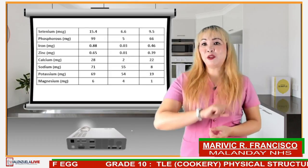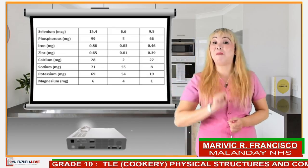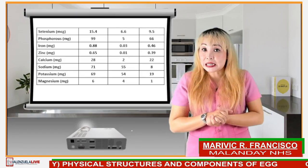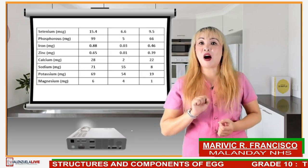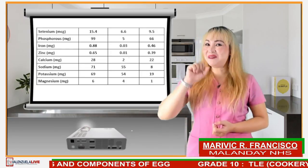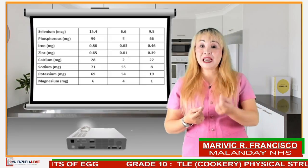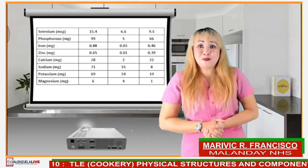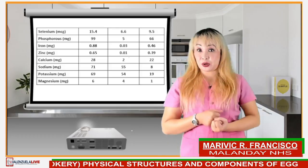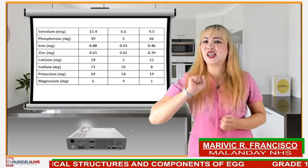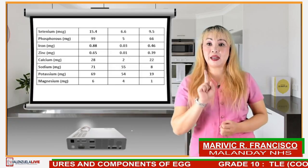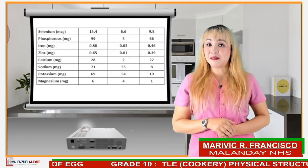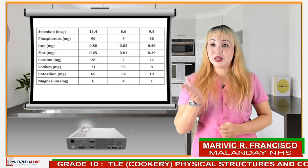Sodium balances fluid in the body, helps send nerve impulses, and is needed for muscle contraction and influences blood pressure. Potassium is one of the most important minerals in the body. It helps regulate fluid balance, muscle contraction, and nerve signals. A high potassium diet may help reduce blood pressure and water retention, protect against stroke, and prevent osteoporosis and kidney stones. Magnesium helps keep blood pressure normal, bones strong, and the heart rhythm steady.